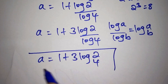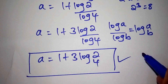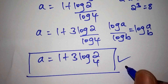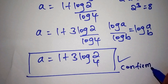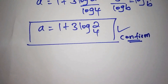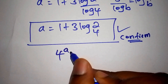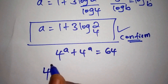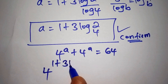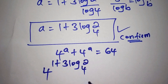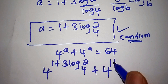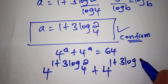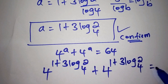This qualifies to be our most correct and best answer. Let us now confirm and see if this answer is truly correct. Our problem was 4 to the power of a plus 4 to the power of a is equals to 64. Substituting, we have 4 to the power of 1 plus 3 log₄2, plus again 4 to the power of 1 plus 3 log₄2, is equals to 64.